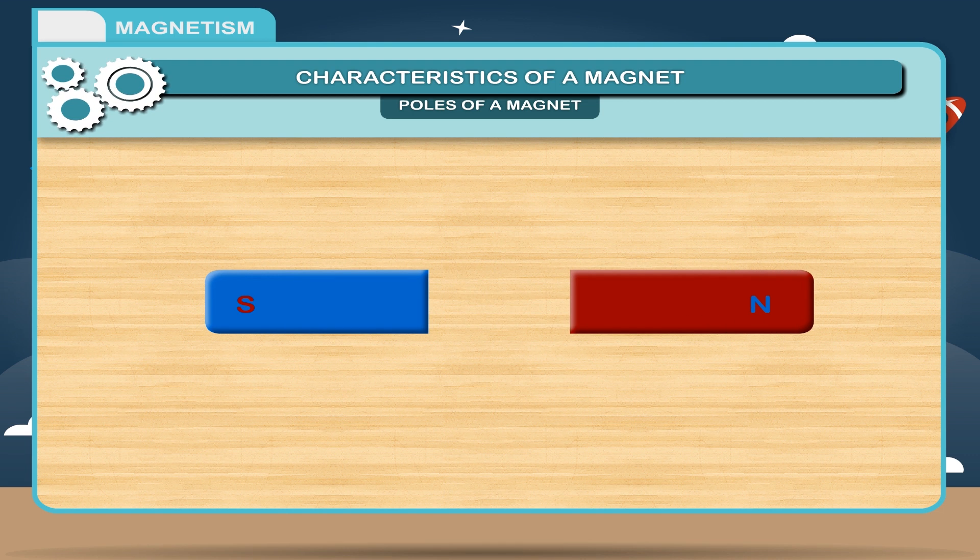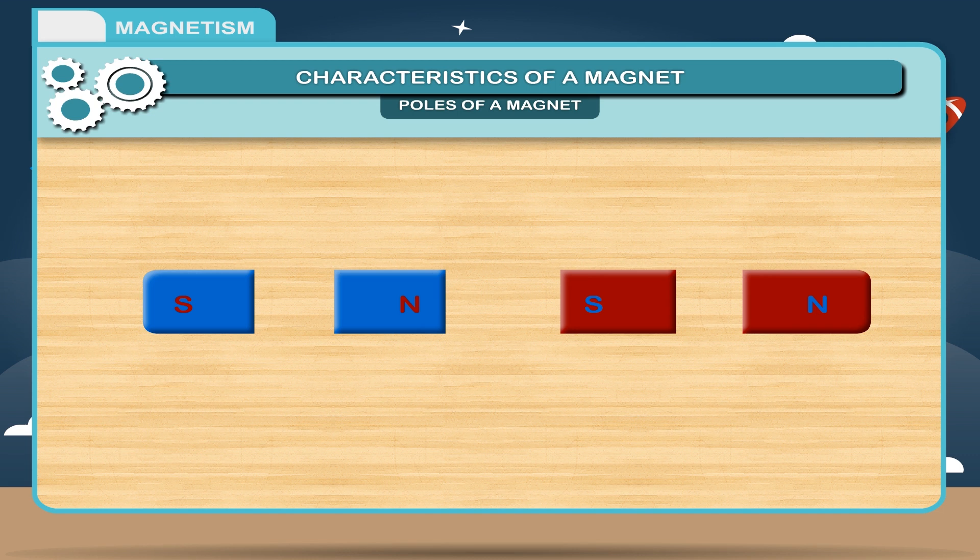If a magnet is broken into two pieces, each piece will comprise a north pole and south pole. If you further divide each piece into two parts, then again each part will behave as a complete magnet having both north pole and south pole. So, we can conclude that magnetic poles occur in pairs only.